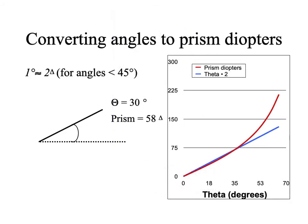You also need to be able to convert between prism diopters and angles. I thought this was completely useless — it turns out it's only mostly useless. For all reasonable angles, say prisms up to almost 60 degrees, the angle theta is going to be equal to half of the prism diopters. So prism diopters is equal to 2 times theta.